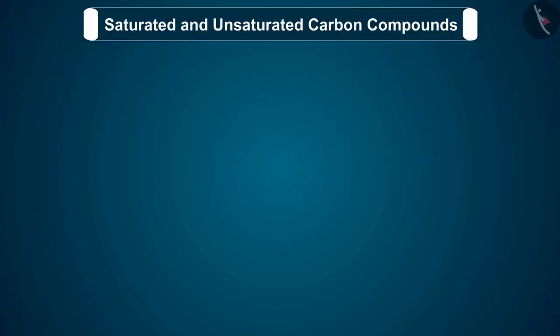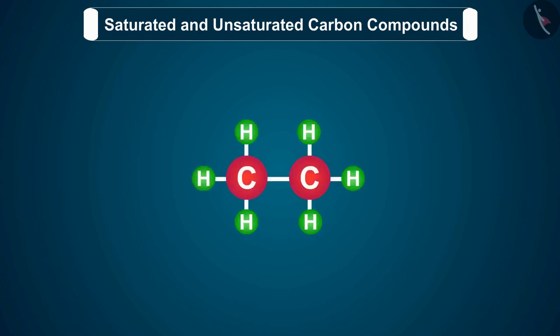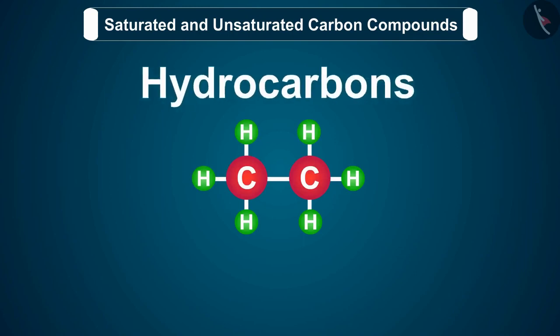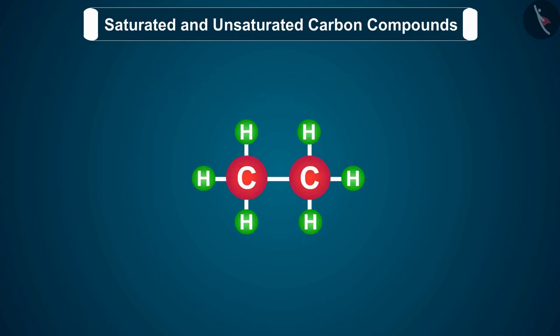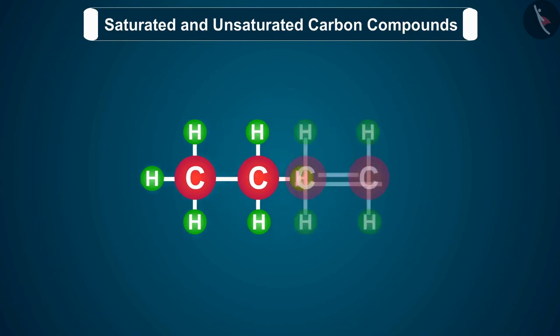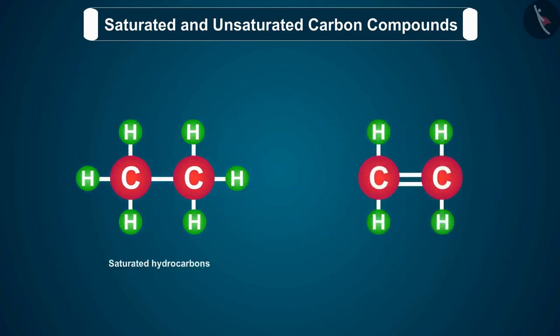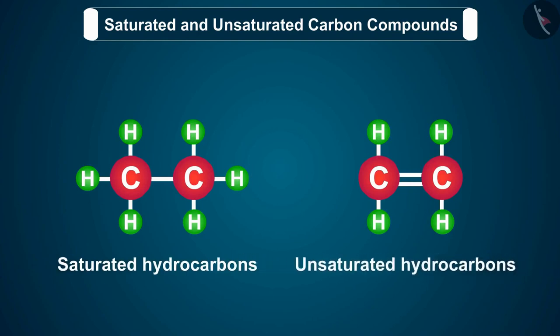Before we move ahead with our discussion, we should know that a compound made up of hydrogen and carbon only is called hydrocarbon. These hydrocarbons are of two types, which are saturated and unsaturated hydrocarbons.